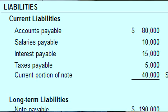With the liability section, we see two main classifications. Number one is short-term debt, which includes anything that's due within one year's time period. And number two is long-term debt, which includes anything greater than one year.